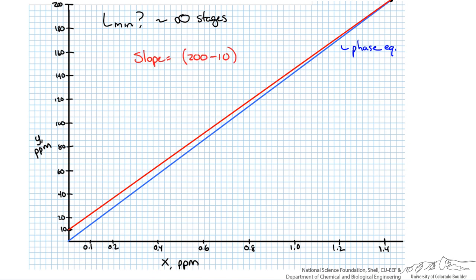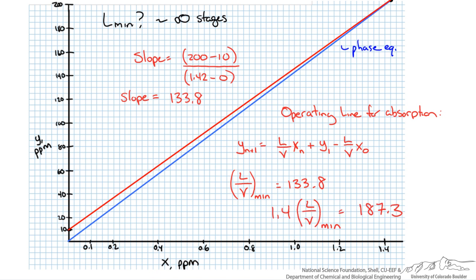So in this case we have 200 minus 10 for our change in y, and we have 1.42 minus 0 for our change in x. We get a slope of 133.8. If you recall our operating line for an absorber is y equals the ratio of our liquid to vapor flow rate times our composition in liquid phase plus our other conditions both leaving and entering our column. So the slope of this line is L over V. So we have now determined L over V minimum as 133.8. And we want to operate at 1.4 times L min, and that gives us 187.3. And we can plot a new operating line through the same initial point at 0, 10 with a new slope of 187.3.